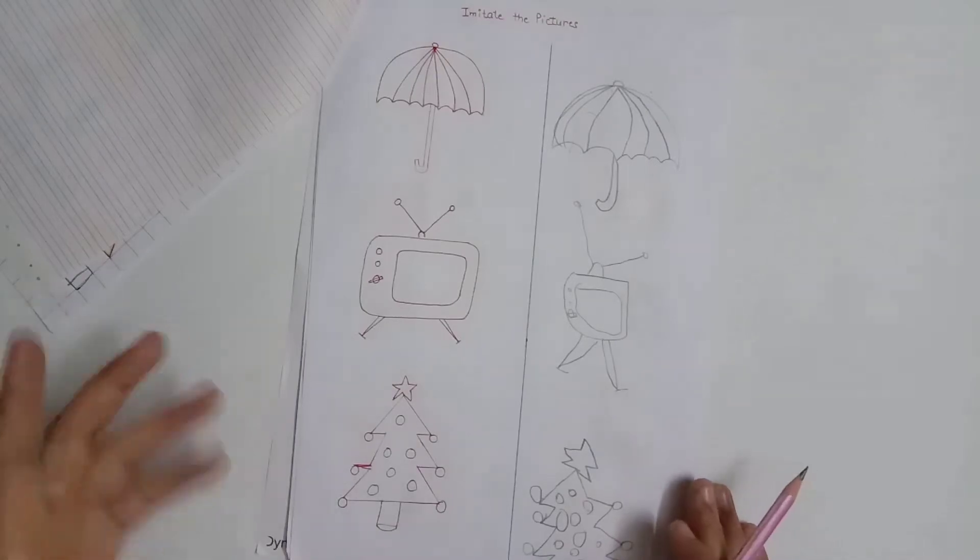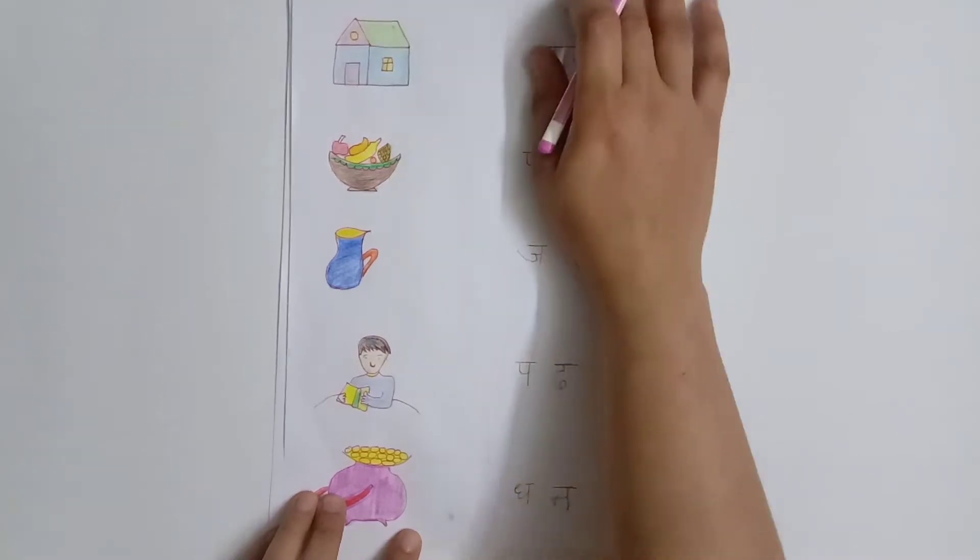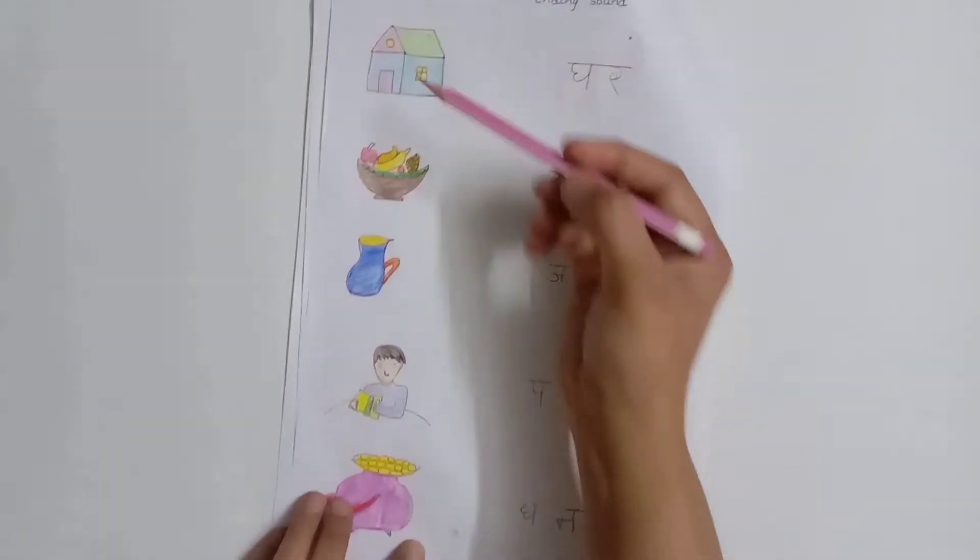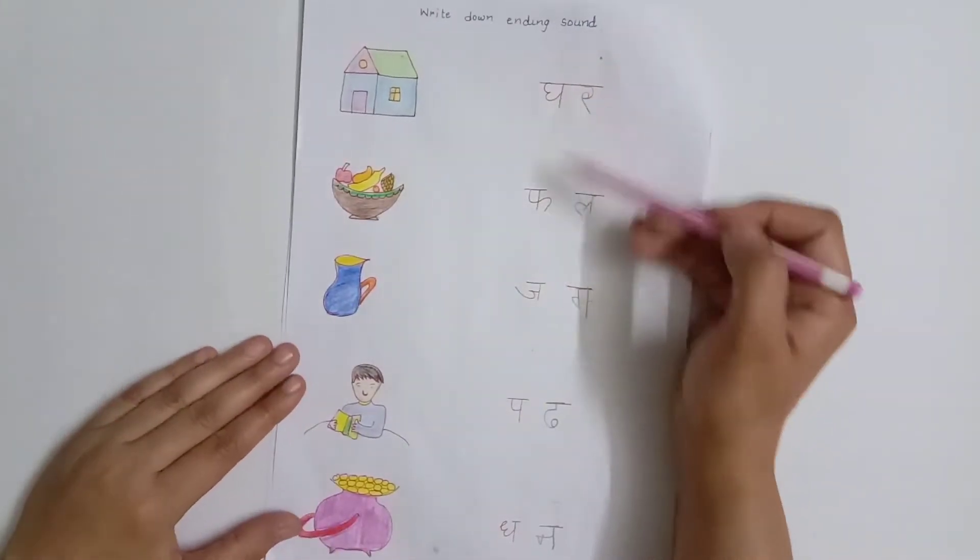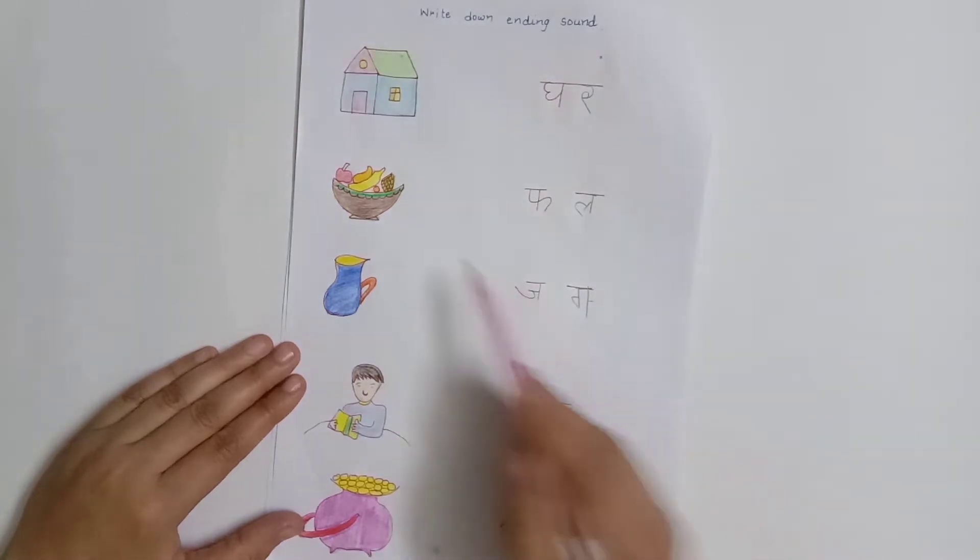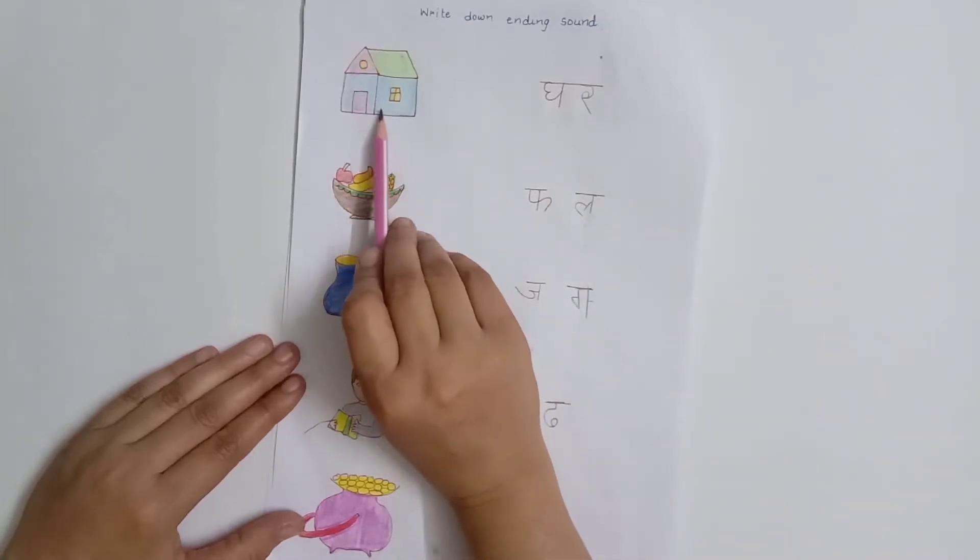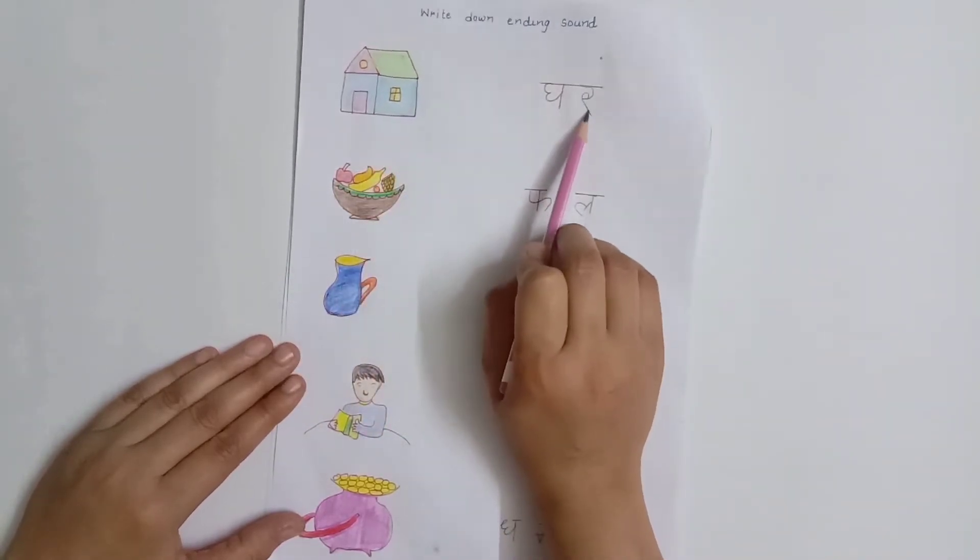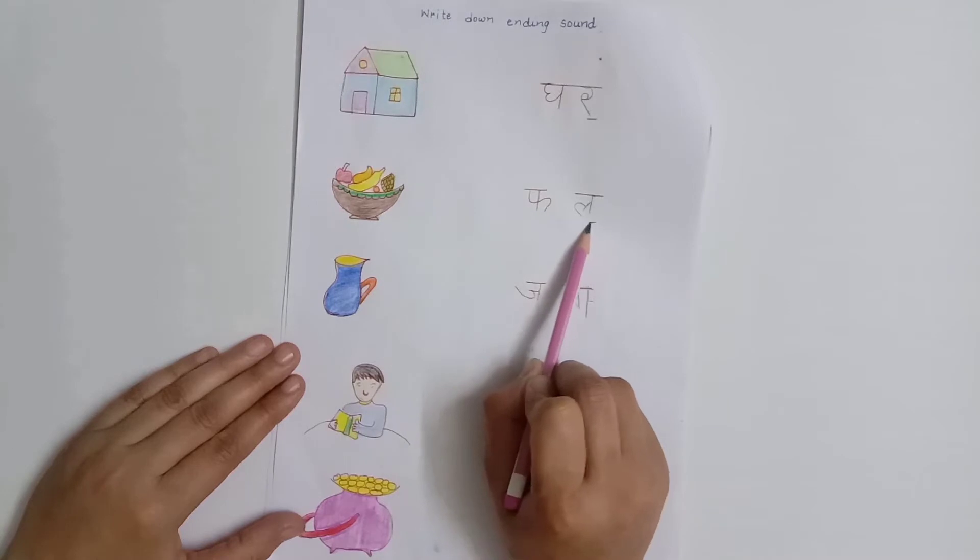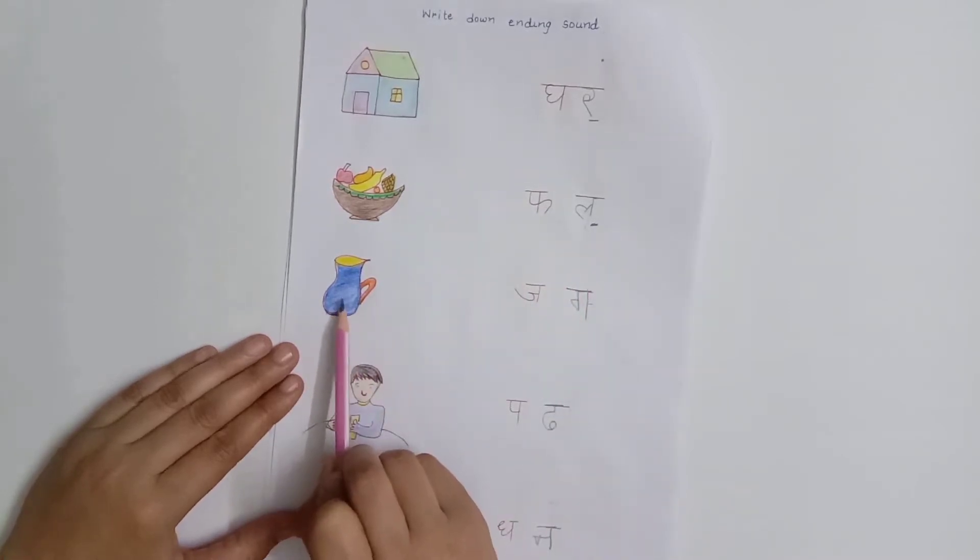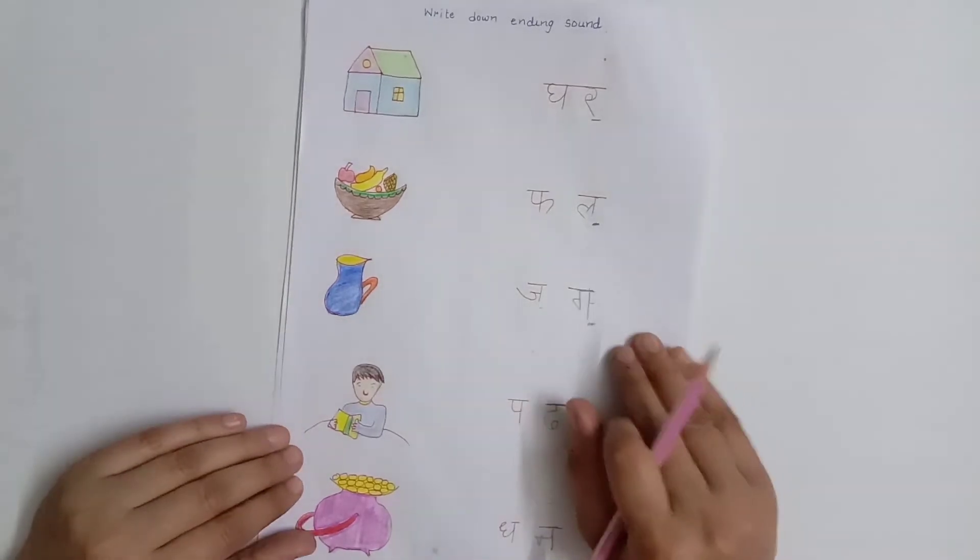This is our next worksheet, again a Hindi worksheet. Here the child has to write down the ending sounds. For this, I have drawn pictures here with two letter words. The beginning sounds I have already written - now the child has to recognize the picture, pronounce it, and accordingly write what the ending sound is. For example, G R - so R is the ending sound. F L - L is the ending sound. G G - so G is the ending sound. This is a wonderful worksheet if you are giving two letter practice.